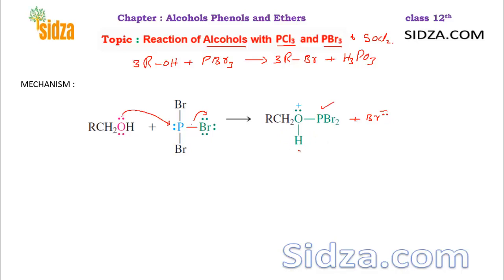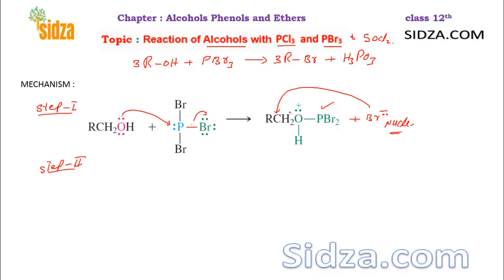From this intermediate, the entire system — H-O-PBr2 — can be replaced by the same nucleophile, Br⁻. This is step number one of the reaction. In step two, the same Br⁻ acts as a nucleophile and attacks on this particular carbon, replacing the H-O-PBr2 group.